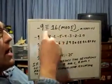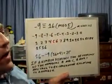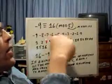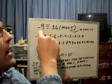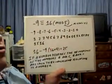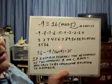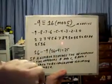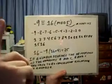So 16 and negative 9 are congruent to each other. And 16 is the residue of negative 9 and negative 9 is the residue of 16. Now residue in those days is now what we call a remainder.